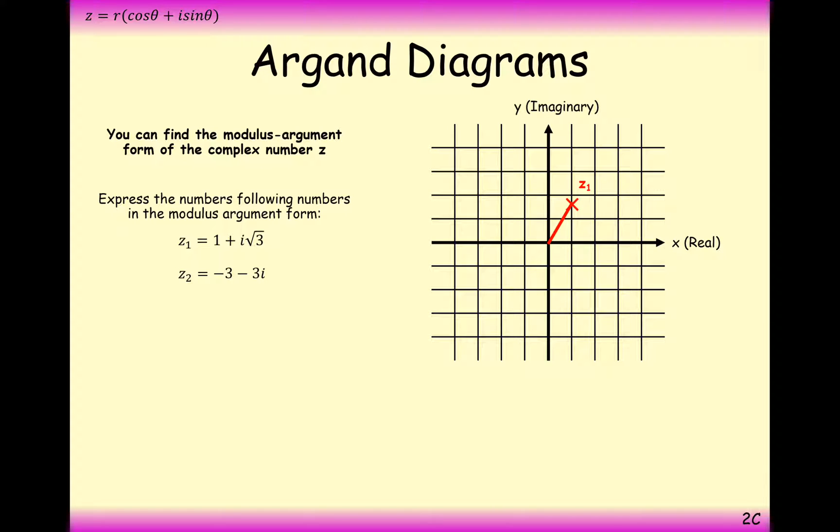Okay, so the first one here is 1 across and root 3 up. So working out the modulus first, this is our second question. Working out the modulus first, it's 1 squared plus root 3 squared, which gives us 2. The argument for z1 is tan minus 1 of imaginary part over real part, so that gives us pi over 3.